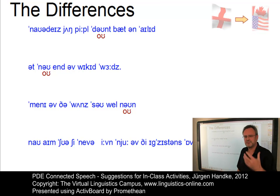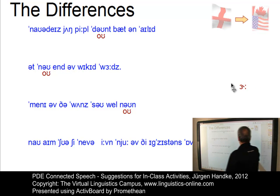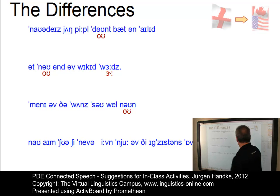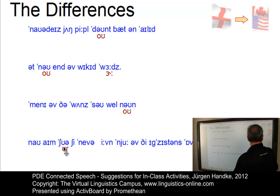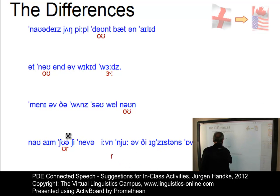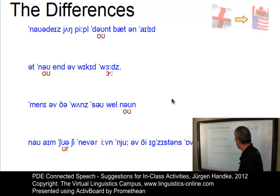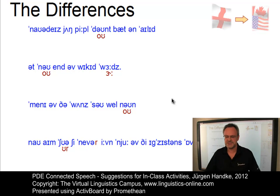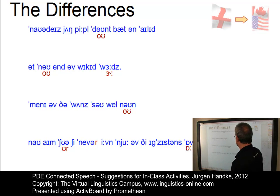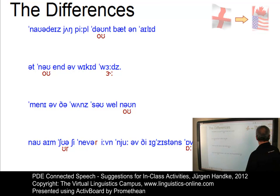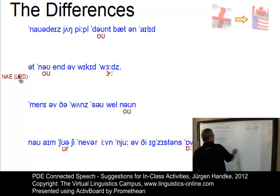Then we have the context where we have a post-vocalic R — for example in words like 'words', we would use the symbol with the rhoticity diacritic. And then we have something like 'sure', where in American English you will get 'sure' with the R. The R in 'never' also occurs in American English because there's a post-vocalic R: 'never'. So those are the basic differences between RP and North American English in terms of the LPD notation.